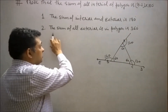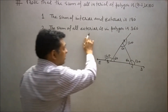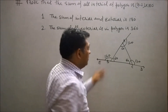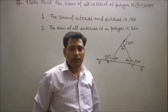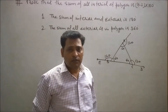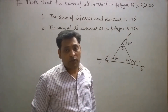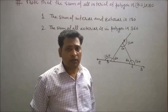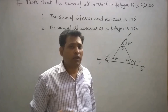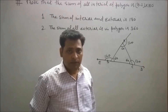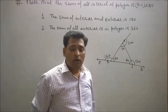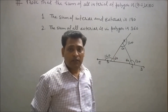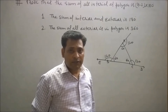The sum of all exterior angles in a polygon is always 360 degrees, whether the polygon is a quadrilateral, pentagon, hexagon, or any other type. The sum of all exterior angles will always be 360 degrees.